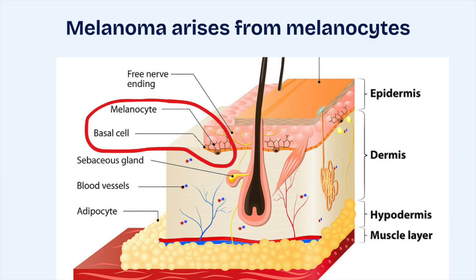But now let's talk about melanoma. Unlike basal or squamous cell carcinoma, melanoma arises from melanocytes, which are pigment-producing cells in our skin.